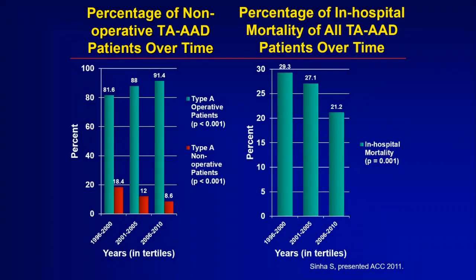We're getting better. The graph on the right shows the percentage of in-hospital death over three different time periods in the IRAD experience — the International Registry of Aortic Dissection that I started in 1994. Over the years, the percentage of patients who die from type A dissection has dropped from 29% to 21%. Even more important, the number of patients who are getting surgery is going up, because our surgeons around the world are taking on more difficult and older patients, leading to improvement in outcomes. Those type A dissection patients — even with stroke or coma — have a better chance with surgery than we thought in the past.